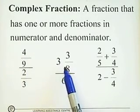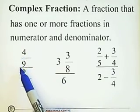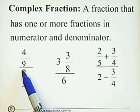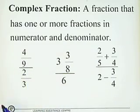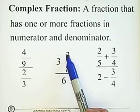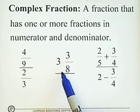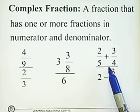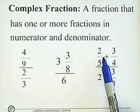Here are three complex fractions. The first one: 4 over 9 is the numerator of the complex fraction, and 2 over 3 is the fraction in the denominator. The second one is the mixed number 3 and 3/8 as the numerator, and the whole number 6 as the denominator. So there is only one fraction in the second example, but the third one has two fractions — one in the numerator with addition and subtraction, and two fractions in the denominator.